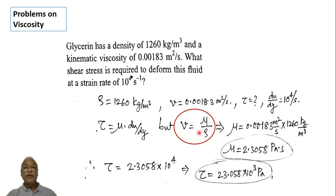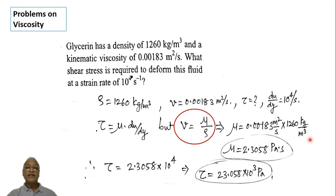Since nu and rho are both given, we can calculate mu. Substituting nu as 0.00183 meter square per second and rho as 1260 kg per meter cube, mu equals 0.00183 multiplied by 1260. Checking the units: meter square per second multiplied by kg per meter cube gives kg per meter per second, which is the unit of dynamic viscosity.